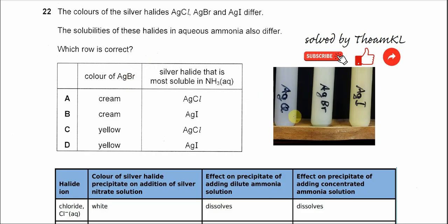Silver chloride is a white precipitate, silver bromide is a cream precipitate, and silver iodide is a yellow precipitate or pure yellow. So for the color of silver bromide, it must be A or B, right? Both say cream.